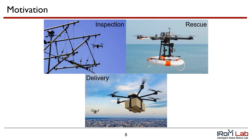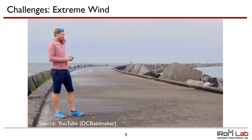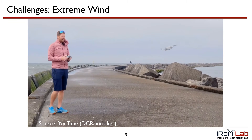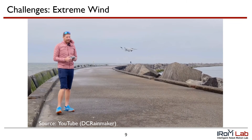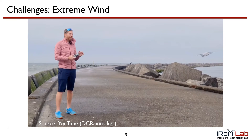This work is motivated by the potential for UAV platforms to transform numerous industries, including infrastructure inspection and repair, search and rescue, and package delivery. In each case, drones must be able to perform reliably in real-world weather conditions, including extreme wind. This is no easy task, as demonstrated in this video, where a typical consumer UAV struggles to maintain a position set point during a windy day at the beach. The wind introduces complex spatial and temporal phenomena.